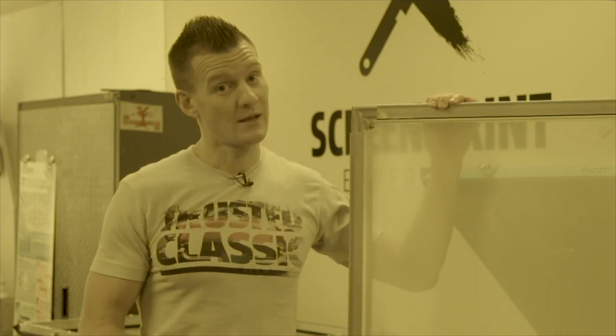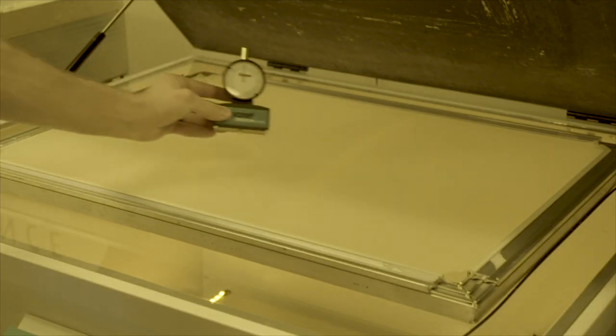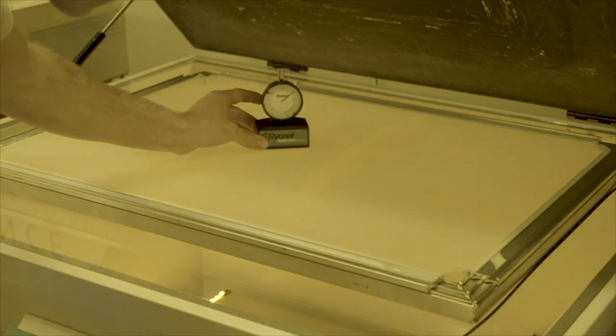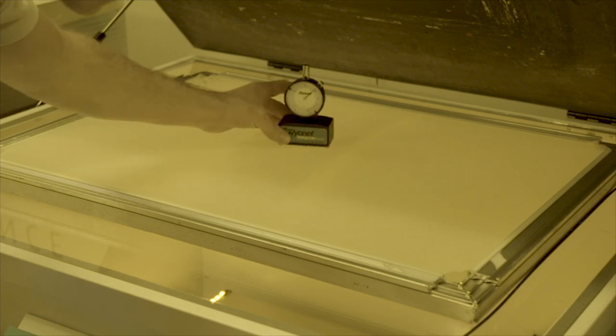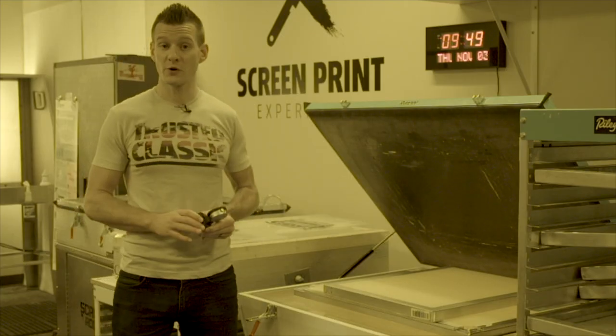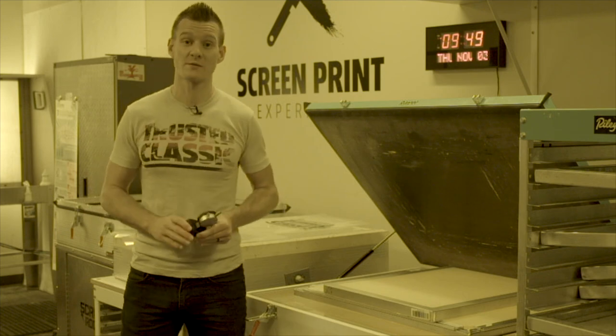If you're using self-tensioning screens, you will be able to get higher tensions and get better results on press. For static frames, on the 305 mesh I recommend at least 18 newtons of tension, which these screens right here come in right under 19 so they're good to go. With a little bit lower, thicker thread mesh on a static frame 230, I would recommend at least 19 newtons of minimum tension.